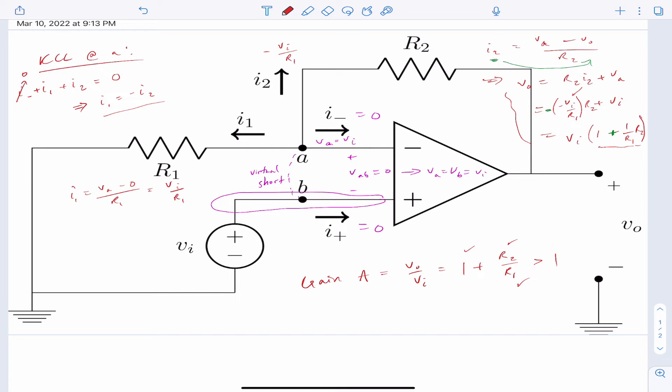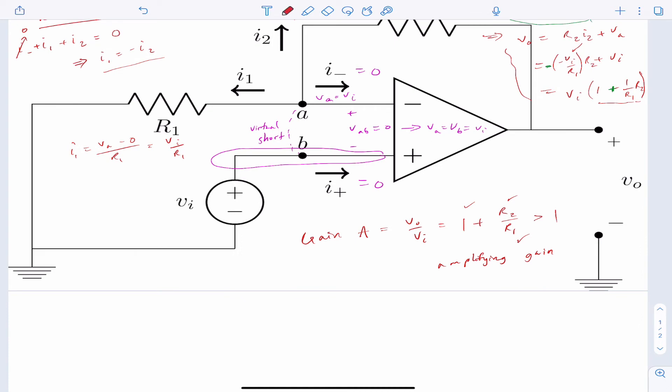So since it's greater than one, we say this is amplifying. If it were less than one, we would say that's attenuating.